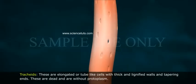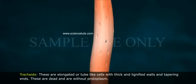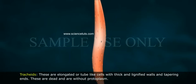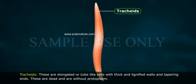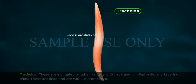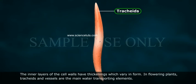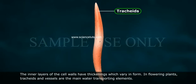Tracheids are elongated or tube-like cells with thick and lignified walls and tapering ends. These are dead and are without protoplasm. The inner layers of the cell walls have thickening which vary in form. In flowering plants, tracheids and vessels are the main water-transporting elements.